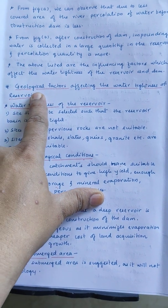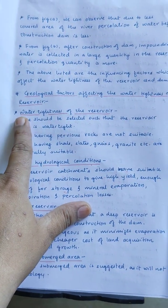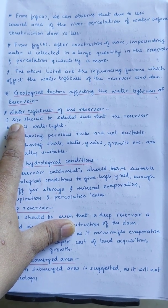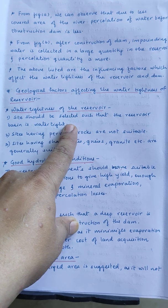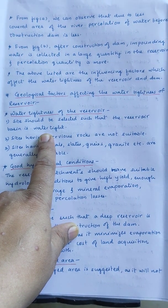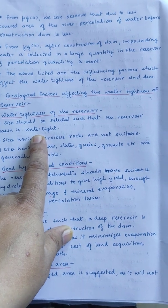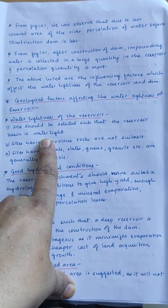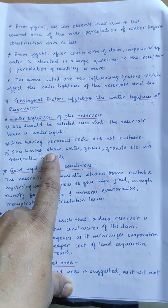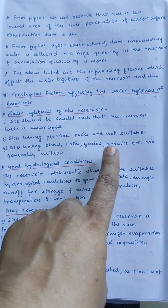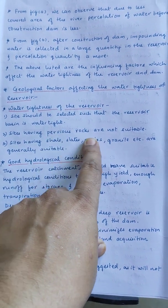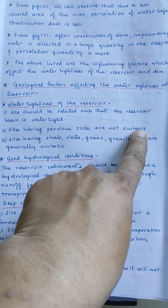Let us deal with geological factors affecting the water tightness of the reservoir. First, the site should be selected such that the reservoir basin is water tight — meaning the bedrock should be hard with no pores within it. The bedrock should generally be made up of basalt or some other type of igneous rock. If it is made up of sedimentary rocks, shales, slates, gneiss, and granite are generally suitable. Rocks like sandstone and limestone, which are called pervious rocks, are not suitable for a reservoir.